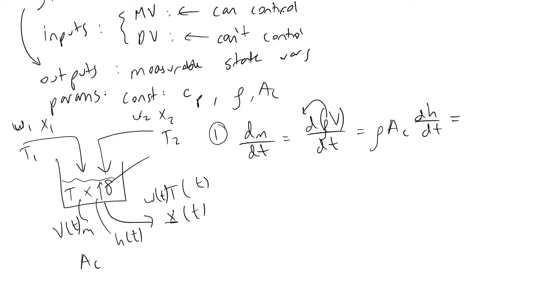This is the left-hand side of our overall mass balance. It equals the mass flow rate coming in w1 plus w2 minus the mass flow rate leaving w. This is the first equation we define.